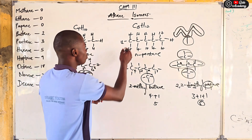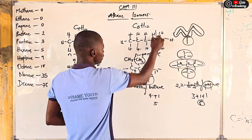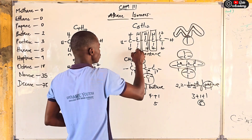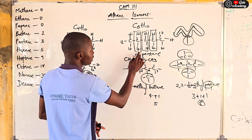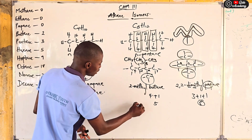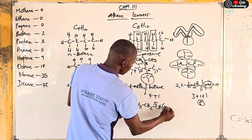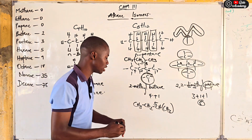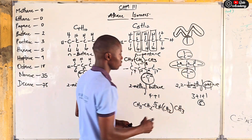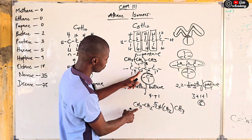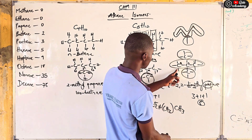For a condensed structural formula question in an exam, n-pentane would be written as: CH3–CH2–CH2–CH2–CH3, with one, two, three CH2 groups in the middle. For 2-methylbutane, the condensed formula is: CH3–CH2–CH(CH3)–CH3, where the CH3 in parentheses indicates it is a branch attached to that carbon atom.